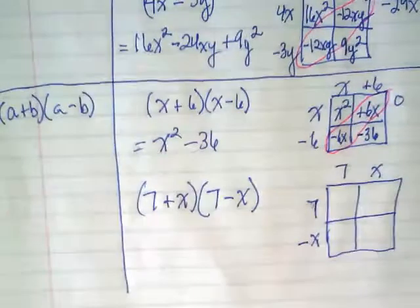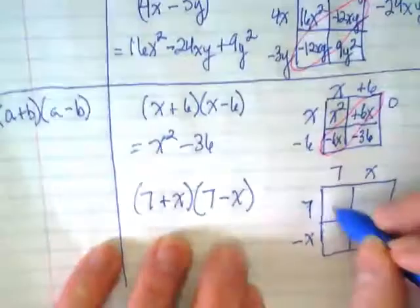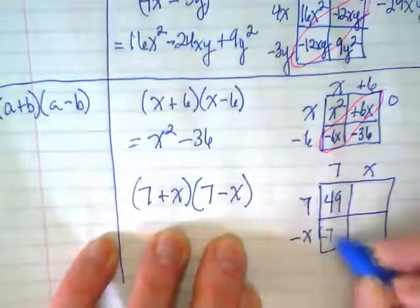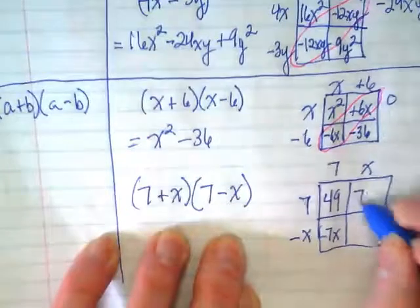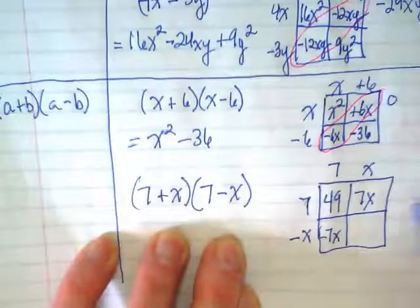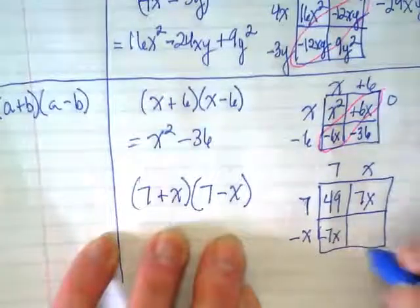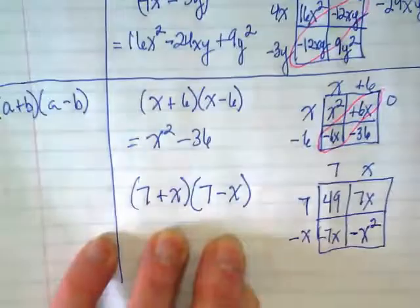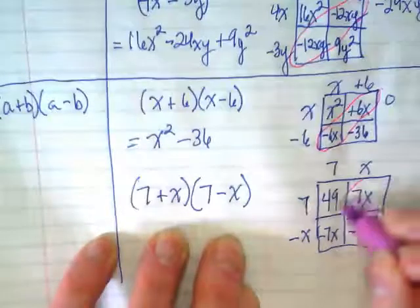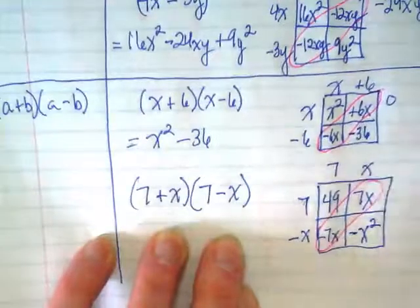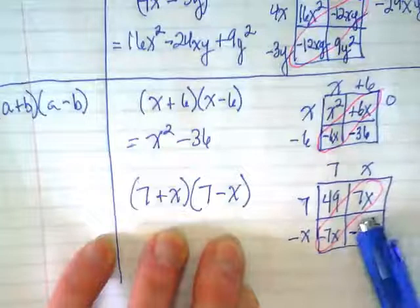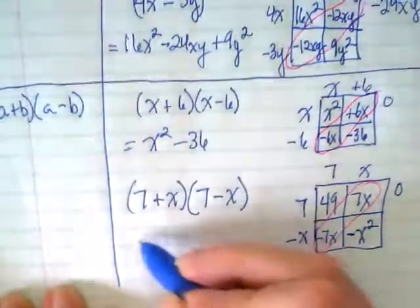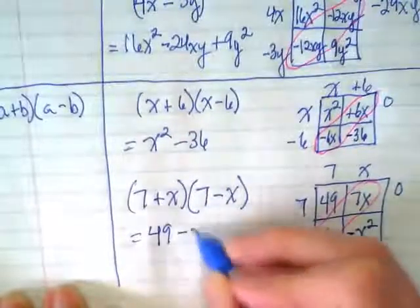Again, we're going to get perfect squares, because 7 times 7 is going to give us 49. -7x, positive 7x. And what happens when I multiply x times -x? -x². First thing I want to do before I write my answer is combine my like terms. And my like terms is a -7x and a positive 7x. That gives us 0. So our answer is 49 minus x².